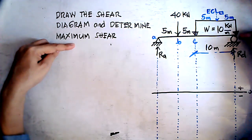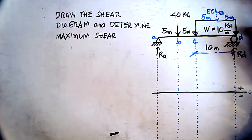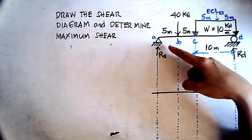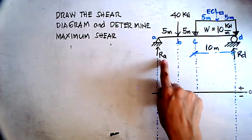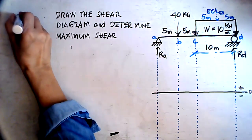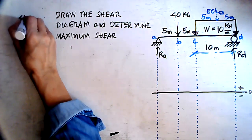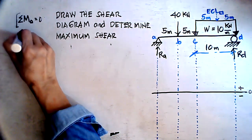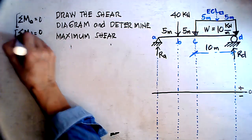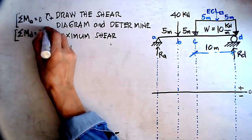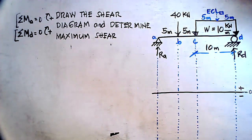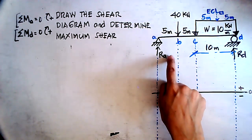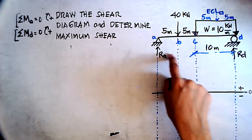What we are going to do now is draw the shear diagram and determine the maximum shear. The first thing we have to do is determine the reactions at the supports. This is a simply supported beam with a hinge and roller, so we need to find the reaction at A and the reaction at D. We will use the sign convention that all forces going clockwise will be positive.